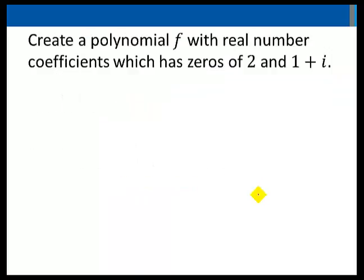Let's create a polynomial f with real number coefficients which has zeros of 2 and 1 plus i. If 1 plus i is a zero and we have real number coefficients, then 1 minus i, the complex conjugate of 1 plus i, must be a zero as well.